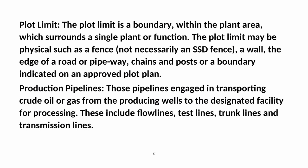Plant Piping: Pressure piping system within an identified plant area. Plant Utility Service: The supply of steam, water, air, nitrogen, or inert gas within a processing plant. Plot Limit: A boundary within the plant area which surrounds a single plant or function — it may be physical such as a fence, a wall, the edge of a road or pipeway, chains and posts, or a boundary indicated on an approved plot plan. Production Pipelines: Pipelines engaged in transporting crude oil or gas from producing wells to the designated facility — including flow lines, test lines, trunk lines, and transmission lines.